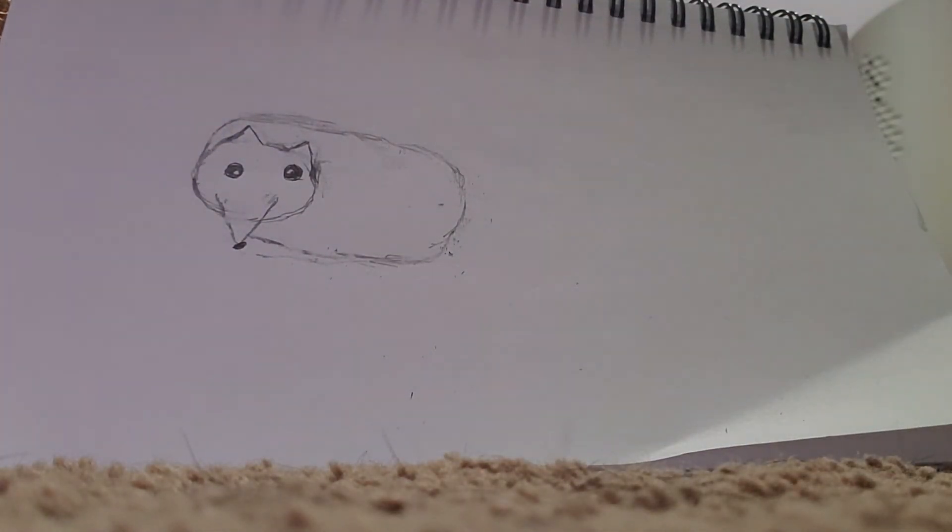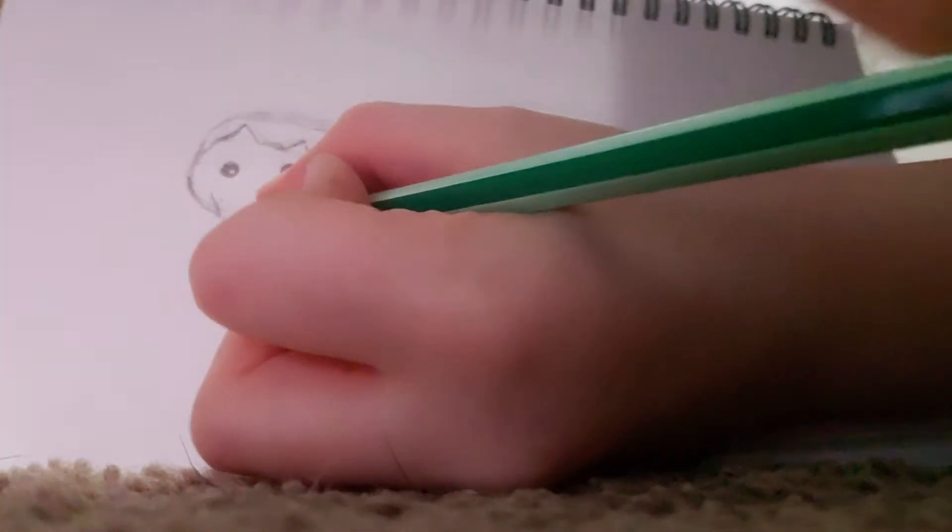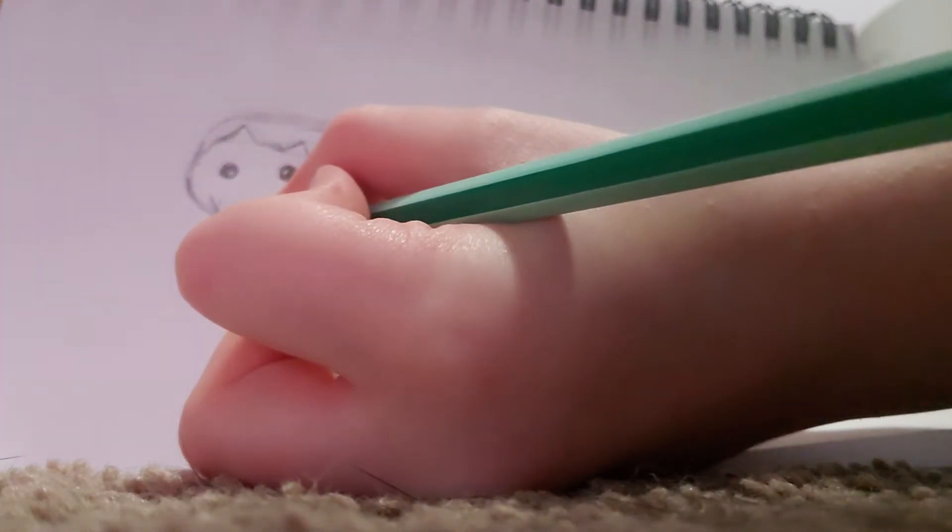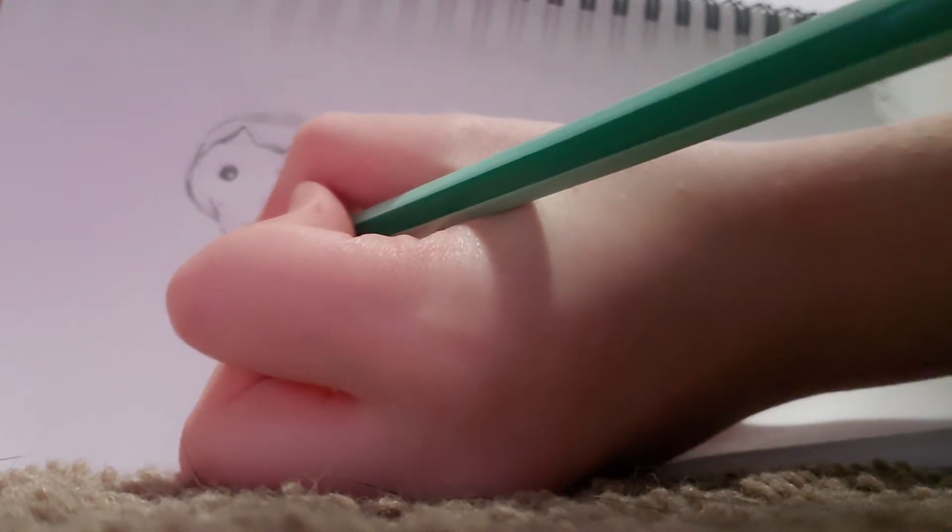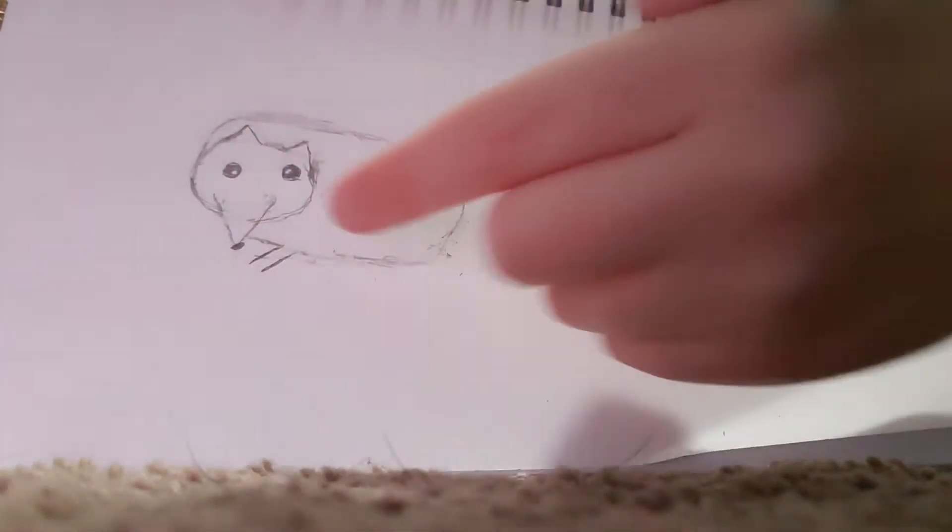Now it's time for the cute little hedgehog spikes, but first you're going to want to draw its little paw coming out. All you're going to want to do is draw two little lines next to each other right there. Then you're going to want to draw three little fingers. Isn't it cute?